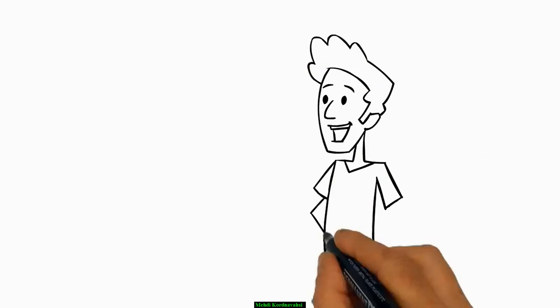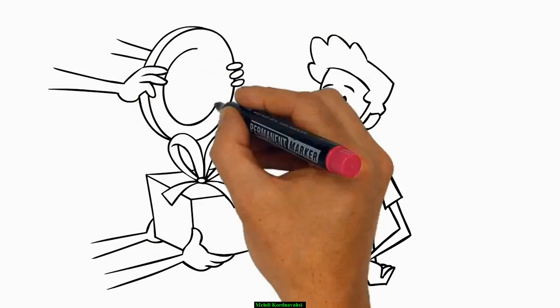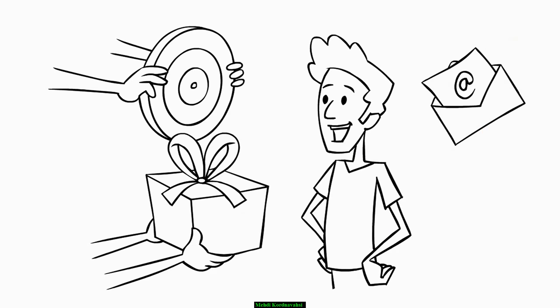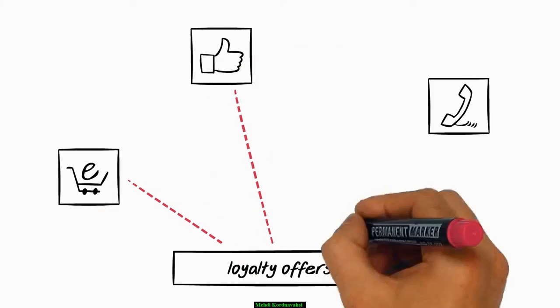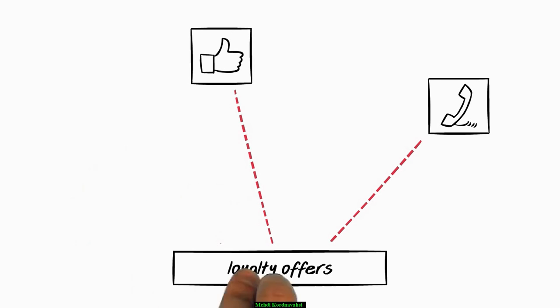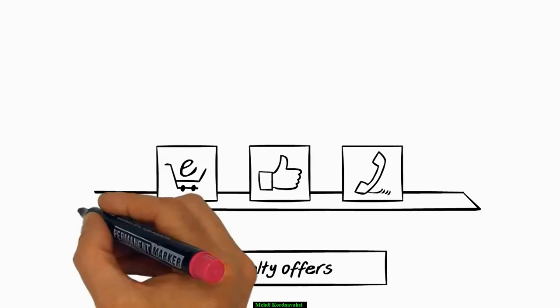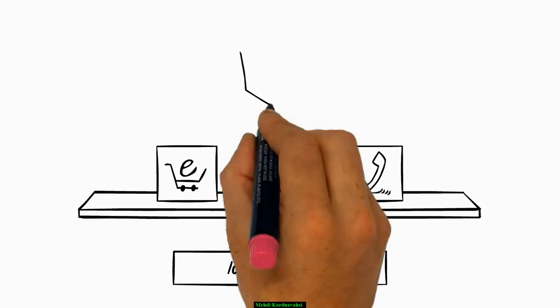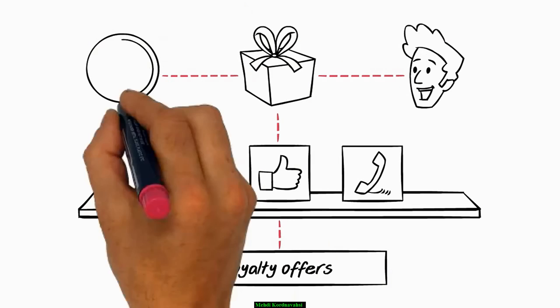Next, show your customers you know them by creating unique experiences and targeted offers. Take those email campaigns to the next level. But the tricky bit is that customers expect loyalty offers to be consistent across channels — all channels. So don't treat your online store differently to your social media channel or call center as a siloed solution. You need a multi-channel marketing platform that will help you deliver the right offer through the right channel to the right customer at the right time.